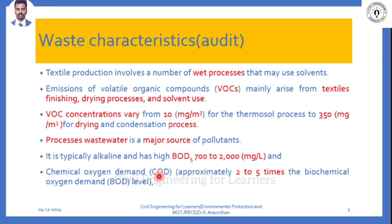There are two types of waste: organic and inorganic. Organic waste can be consumed by bacteria, but bacteria cannot consume inorganic waste. Imagine you pour paint on a floor - after 100 days, the paint waste will not be reduced. But if you spill curd, bacteria will consume it within days. Chemical Oxidation Demand is 2 to 5 times higher than Biological Oxidation Demand in textiles - the industry produces more chemical waste.